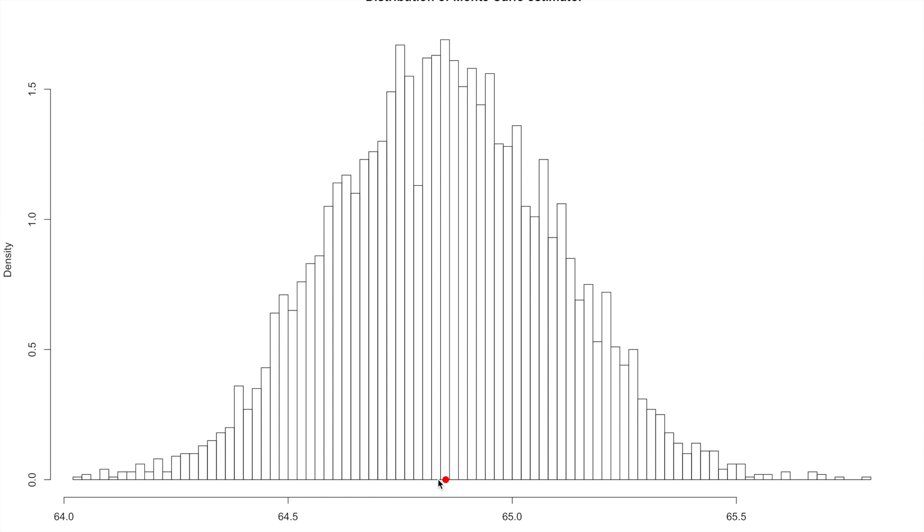The red dot down here marks the fair price from the Black-Scholes formula. We see that the MC estimates varies between 64 and almost 66. But in most of the cases it is quite close to the theoretical value from the Black-Scholes formula. We could however increase the precision of the Monte Carlo estimator by applying some of the techniques we have seen in some of the previous videos.